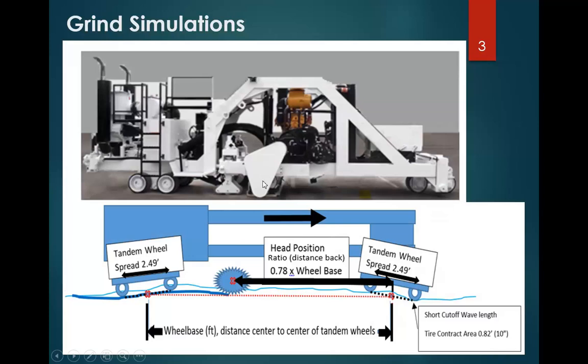ProVal models that. If we know the elevations of the road profile along a wheel track every single inch and we input the dimensions of this grinder, we can calculate the elevations of the tires. We know the lengths and we know how far apart they are. We can calculate the elevations at all these locations. That's what ProVal is doing. It's doing that every single inch.